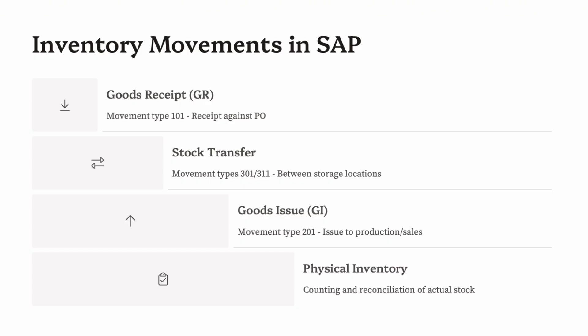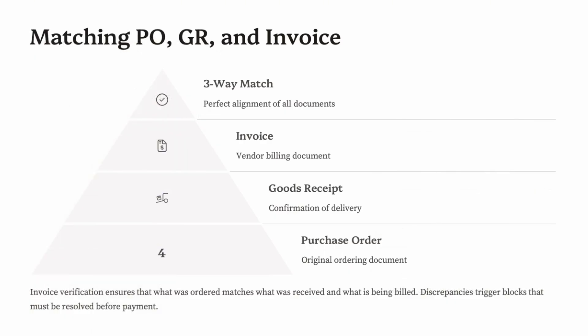Third, Inventory Management: this is where material physically moves. Goods Receipt (GR) is recorded when goods arrive at your warehouse or plant. Goods Issue (GI) is when goods are sent out for production or sales. Transfer Posting handles internal movements or changes in stock status. Movement Types define each transaction type — for example, 101 for GR and 201 for GI. Fourth, Invoice Verification: this connects MM to FI, ensuring the invoice received matches the PO and the GR. If there's a mismatch, the system flags it for correction. Once verified, it's posted to accounting for payment processing. Each of these components supports the overall procurement cycle in a highly structured and traceable way.